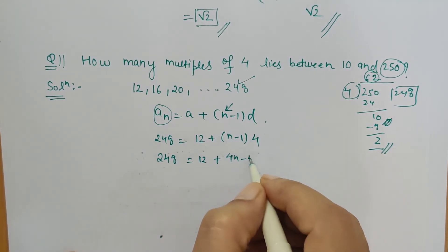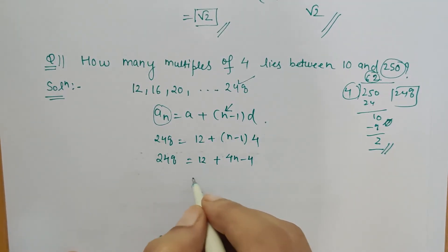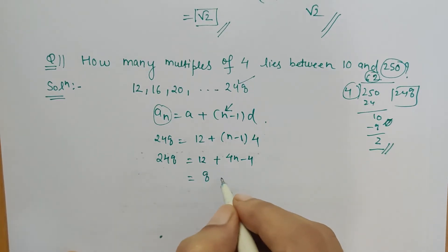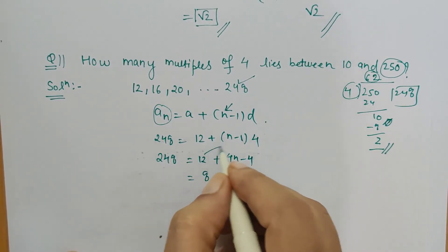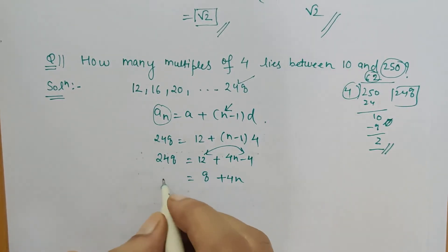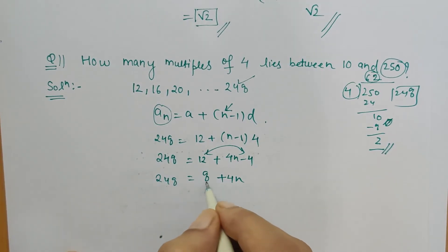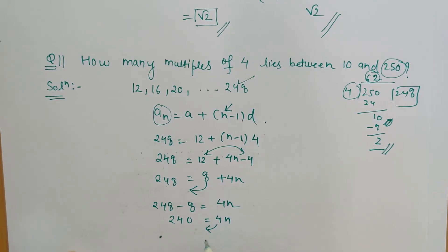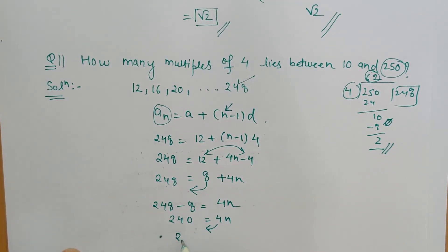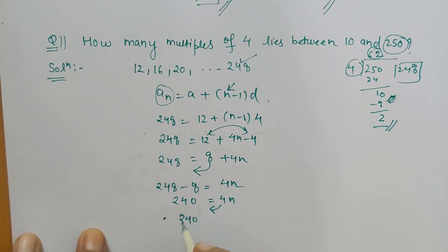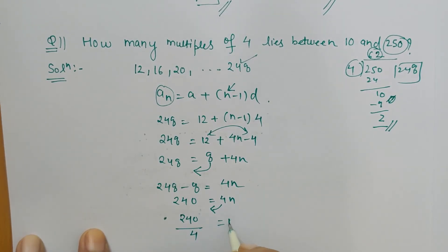Here, 12 minus 4 is 8 plus 4n, which equals 248. Now shift 8 to the left side, so 248 minus 8 equals 4n. This is 240. Now shift this 4 to the denominator, so we get 240 divided by 4 equals n.